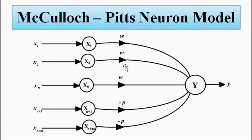Then from xn+1 to xn+m, there consist of numerous neurons in between. They have weighted connections with synaptic weights given by minus p, negative.